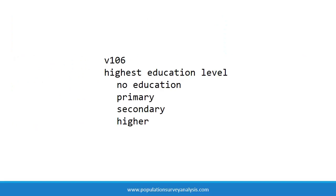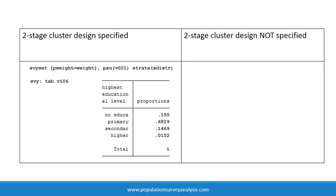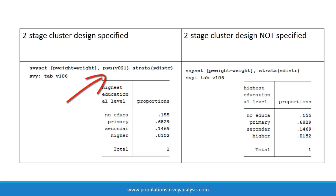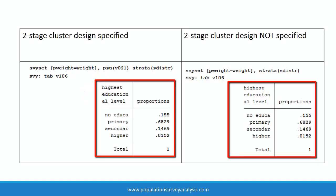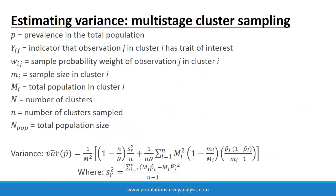Let us demonstrate this. We are estimating the highest level of education among women in the Rwanda 2010 DHS sample. Whether we correctly specify the two-stage cluster design with a survey set statement, or run statistics without specifying the two-stage cluster design, the mean proportion of women at different levels of education remains the same. Cluster sampling only affects variance estimates.